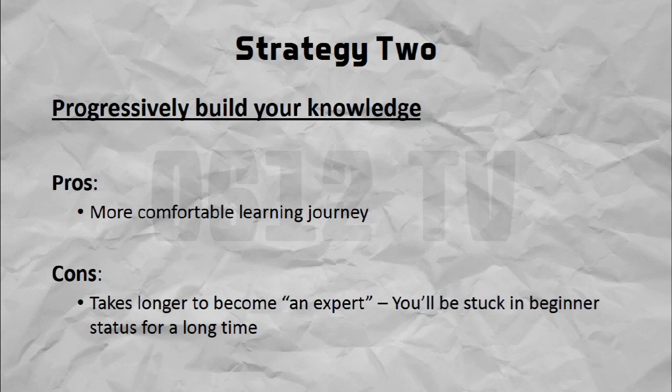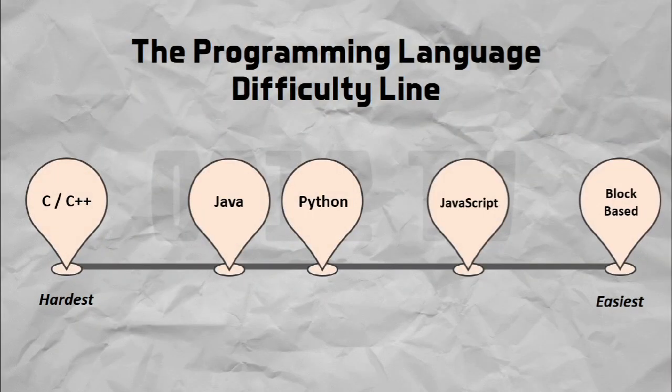Strategy number two is to just learn enough to get along with, and in the future as you need more things you can adapt and pile on the knowledge as you move along. This is a lot more gentle, but you have to do a lot of learning over a longer period of time and you may find yourself stuck at a beginner level for a very long time. At the end of the day it's up to you to choose. Now I'm going to introduce a difficulty line with five classes of programming languages, and we'll move from the hardest language down the line.